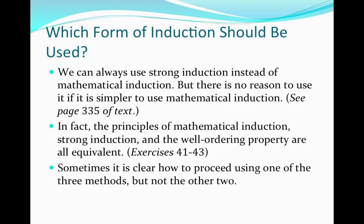If they are equivalent, when do we use one over the other? We can always use strong induction instead of mathematical induction and take advantage of the bigger induction hypothesis. But in some cases, we don't need to use that stronger hypothesis, so we don't, because it simply complicates matters. However, there are instances where we do need to apply that stronger hypothesis — we need to know that the property holds for every natural number less than or equal to k in order to prove it for k plus 1.